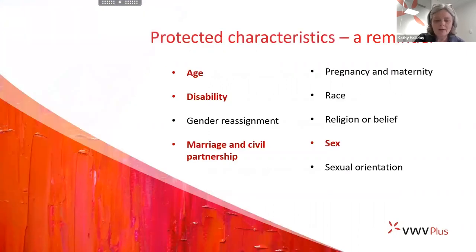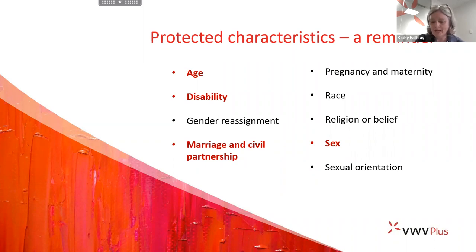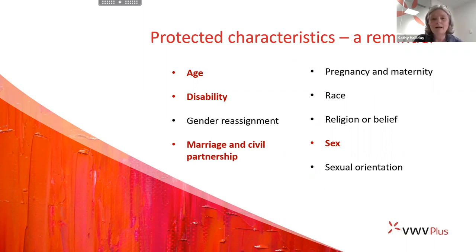Before we go into the cases, we thought it was worth having a very brief reminder of some of the principles we're going to be looking at. The first thing is a reminder of the protected characteristics under the Equality Act. There are nine of these, and the cases we're looking at today deal with age, disability, marriage and civil partnership, and sex. Employees can be discriminated against directly, indirectly; they're protected against being harassed and against being victimised.